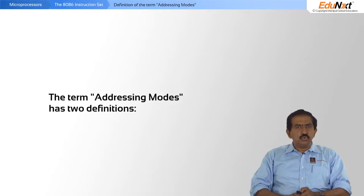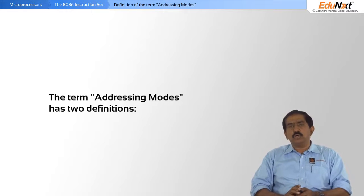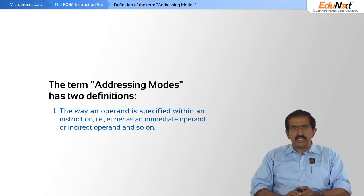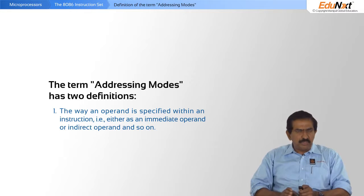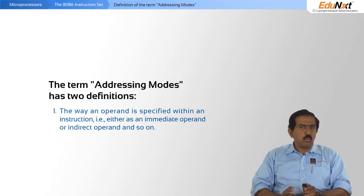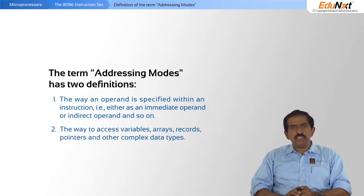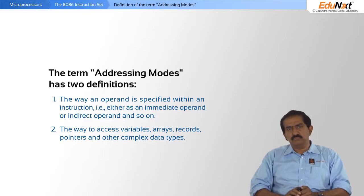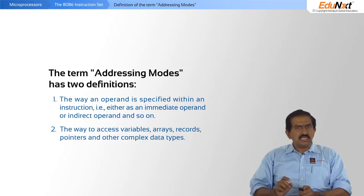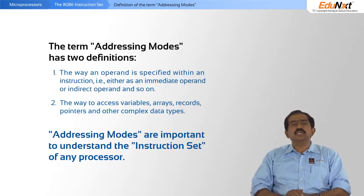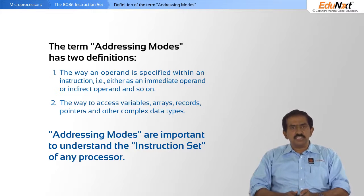There are basically two definitions for something called the addressing mode, which is important to understand when talking about instruction sets. The first definition is the way an operand is specified within the instruction — so there can be immediate operands, indirect operands, and so forth. The second definition is the way to access variables, arrays, records, pointers, and other complex data types. These two are standard accepted definitions of the term addressing mode.